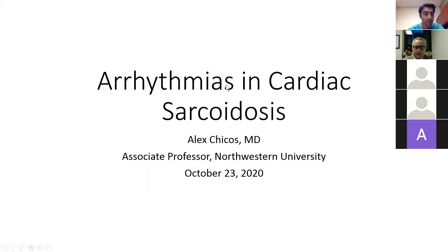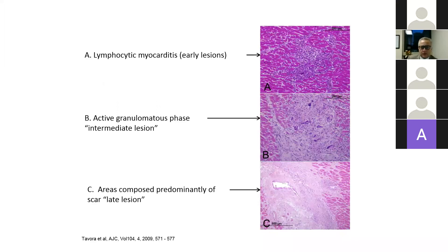Thanks, Nishant. I'll be talking about arrhythmias in cardiac sarcoidosis from an EP perspective. As you know, sarcoidosis is an inflammatory disease and we have different stages of inflammation. We have an early stage of lymphocytic myocarditis, a granulomatous phase which is an intermediate stage of inflammation — these granulomas are non-necrotizing or non-caseating as opposed to tuberculosis — and then a late stage where myocytes and other tissue destroyed by inflammation is replaced by scar.